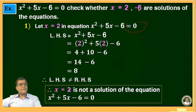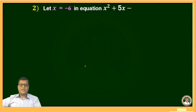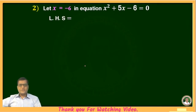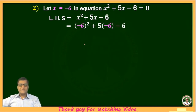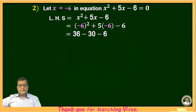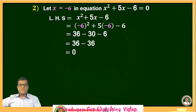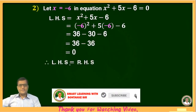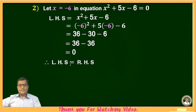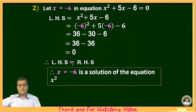Next, substitute x = −6 in the equation x² + 5x − 6 = 0. LHS = (−6)² + 5(−6) − 6 = 36 − 30 − 6 = 0. Since LHS = RHS = 0, therefore x = −6 is a root and solution of the given equation x² + 5x − 6 = 0.